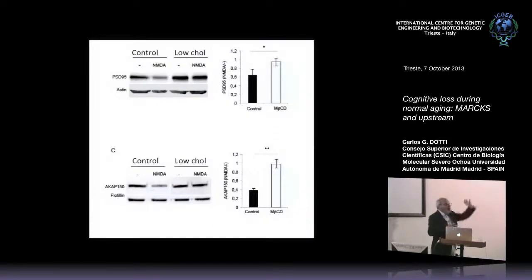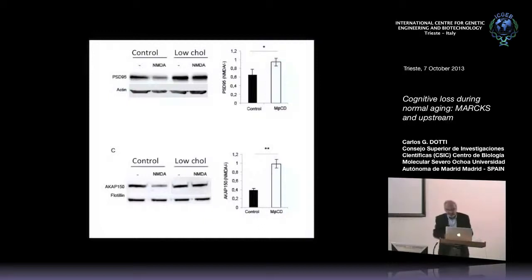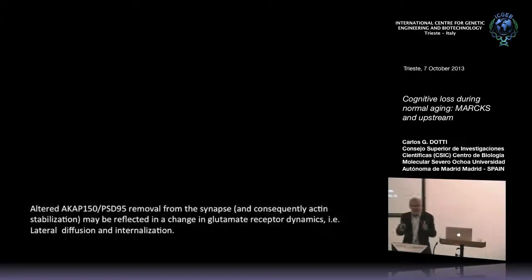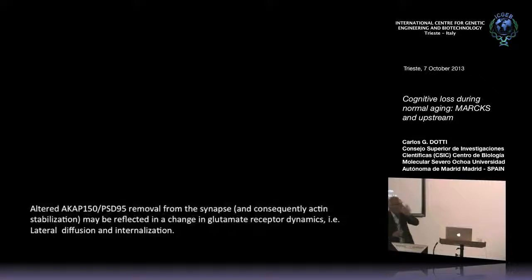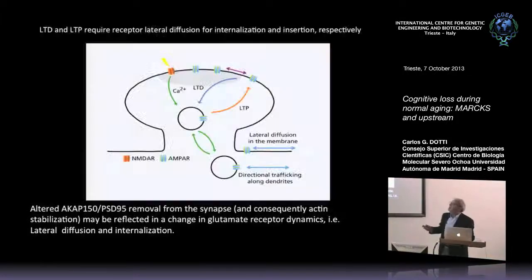So the biochemistry of cholesterol loss is perturbing synaptic plasticity on two levels: first, we don't have enough PIP2 for the PLCγ pathway; second, there is a defect at the level of the AMPA glutamate receptors themselves. An altered ACAP150 and PSD-95 removal from the spine may be reflected in a change in glutamate receptor dynamics. So we're going to look at receptor lateral diffusion and internalization, which are important for long-term plasticity.